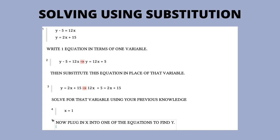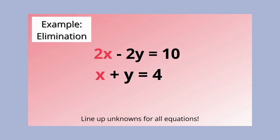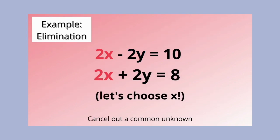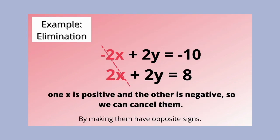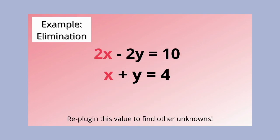Method two is elimination. To solve using elimination, you eliminate one of the variables. Line up both equations so coefficients and letters match, then figure out a way to cancel out one of them. Solve for one letter and plug it back in to solve for the other.